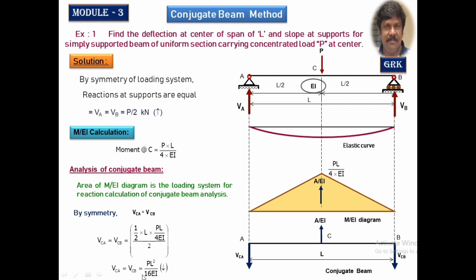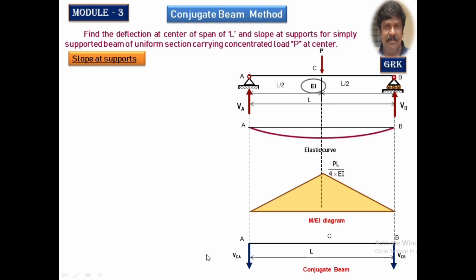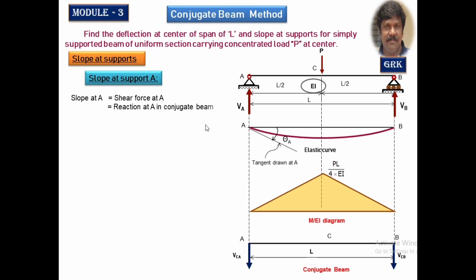This reaction PL² by 16EI is very important for getting the slope at the supports. Let us find out the slopes at the supports. Since the beam is symmetrically loaded, the slopes at A and B will be equal. According to theorem number 1 of the conjugate beam, the slope at A equals the shear force at A of the conjugate beam, and shear force at A is nothing but the reaction at A.